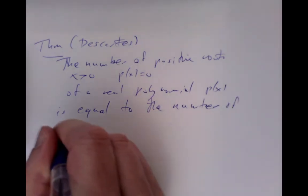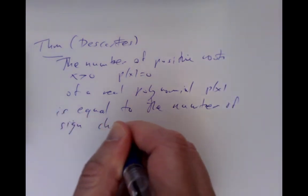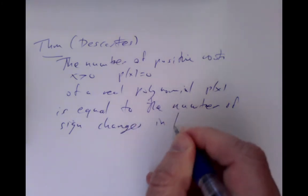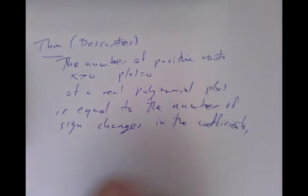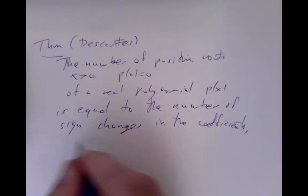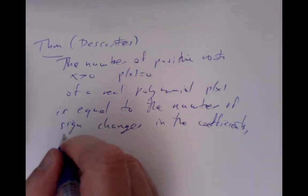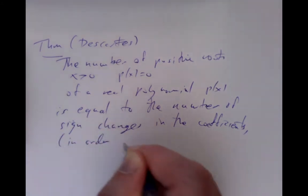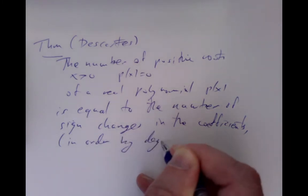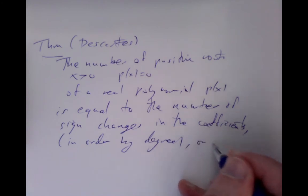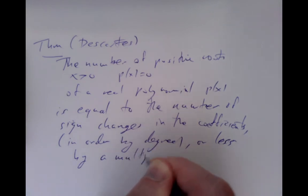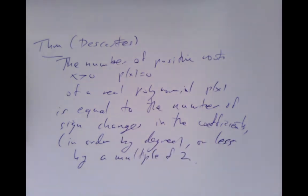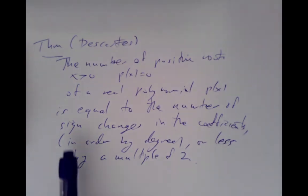The number of positive roots equals the number of sign changes — but sign changes not in the polynomial, but in the coefficients. We look at the coefficients in order of degree, and count how many times their signs change. The number of positive roots equals the number of sign changes, or less by a multiple of two.